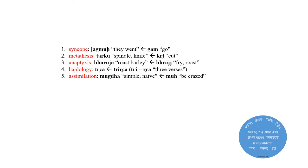Some of these processes are: syncope — loss of one or more sounds from the interior of a word (example: Jagmu, 'they went,' from the root Gam, 'go'); metathesis — transposition of sounds and syllables in a word, especially contiguous ones (example: Tharku, 'spindle/knife,' from the root Krith, 'cut'); anaptyxis — insertion of a vowel in a word (example: Bharuja, 'roast barley,' from the root Bhaj, 'fry or roast'); haplology — elimination of a syllable when two identical or similar syllables occur consecutively (example: Tricha from Tri+Richa, '3 verses'); and assimilation — vowels or consonants changing to be more similar to nearby sounds (example: Mugdha, 'simpleton,' from root Muh, 'be crazed').